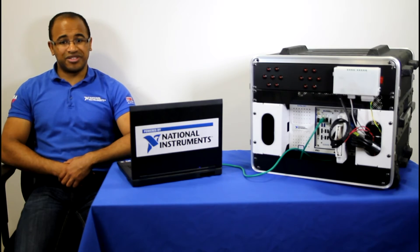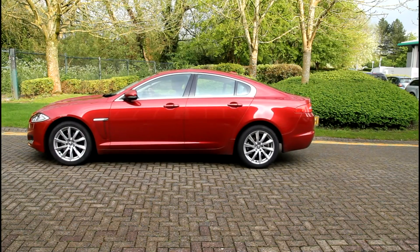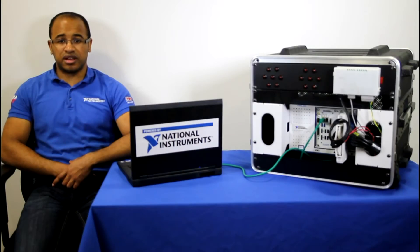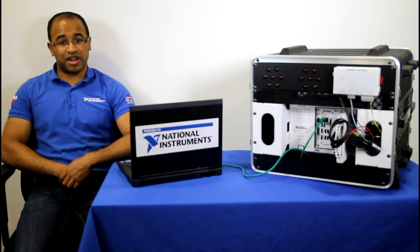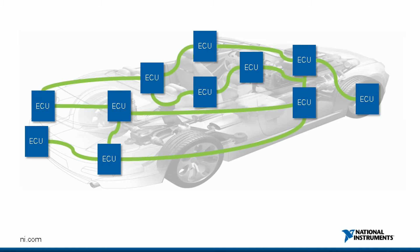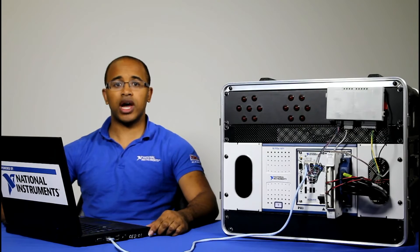Modern cars now use advanced electronic systems for all aspects of the car's operation. From the engine control unit, which helps to maximise efficiency and performance, to any number of electronic control units which can control and monitor everything from the car's electric windows to its rear windscreen heater. Whatever the functionality, these units are often described with the acronym ECU. Each of these ECUs are separate control subsystems which interact and communicate with each other over a variety of automotive communication buses, most commonly the controller area network bus, or CAN bus.